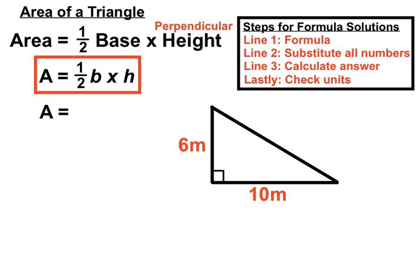Okay, let's have a look at some numbers here. We've got 10 on the base and we have 6 as our perpendicular height. You'll notice the perpendicular height is one of the sides of the triangle. That doesn't always happen but it does in this case.